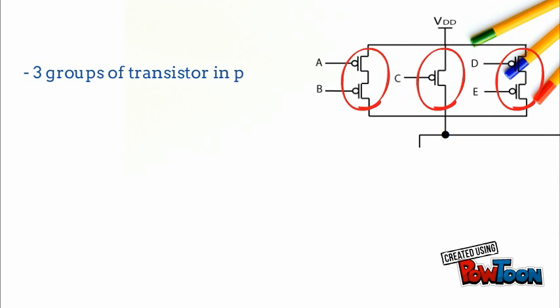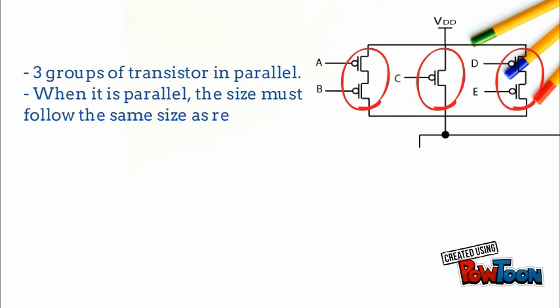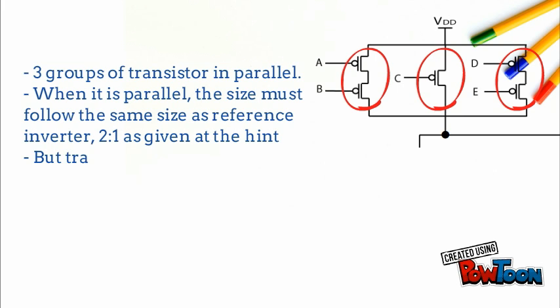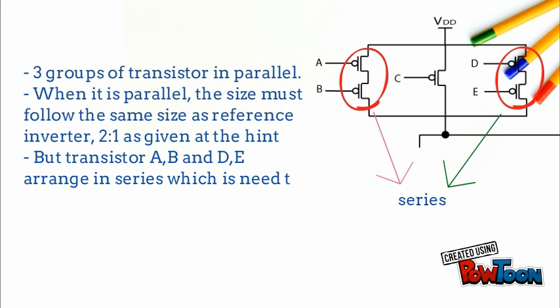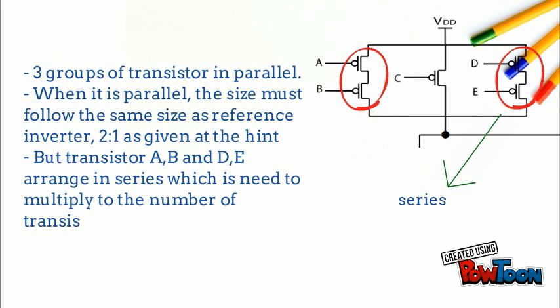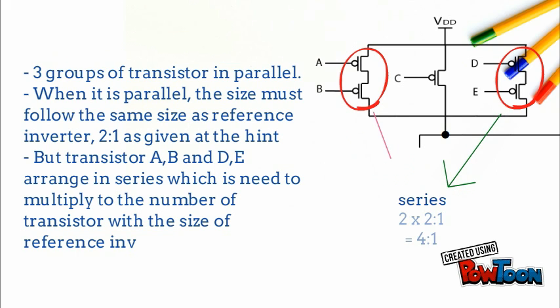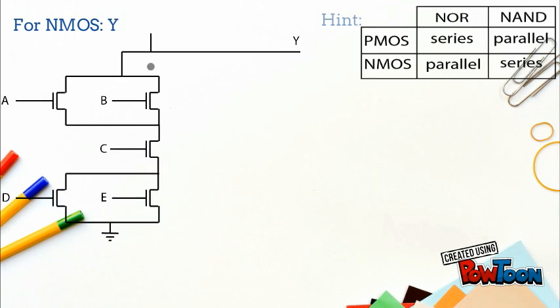There are three groups of transistors in parallel. When in parallel, the size must follow the same size as the reference inverter — 2-to-1 as given. But transistors A, B and D, E are arranged in series, which requires multiplying the number of transistors by the size of the reference inverter: 2 times 2-to-1 equals 4-to-1.